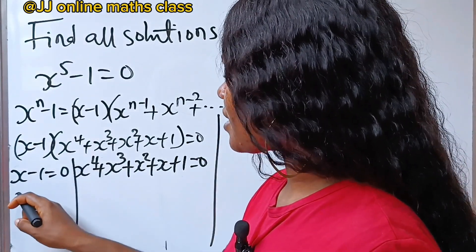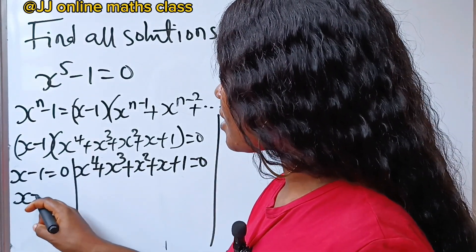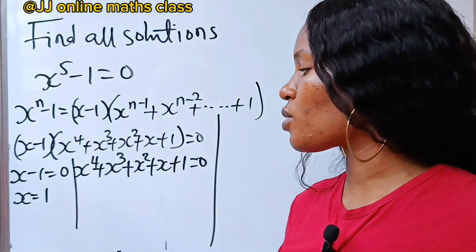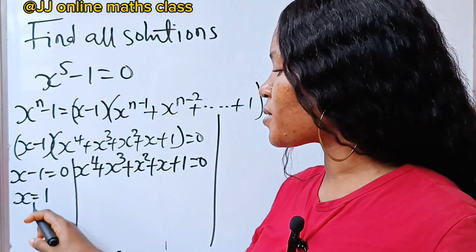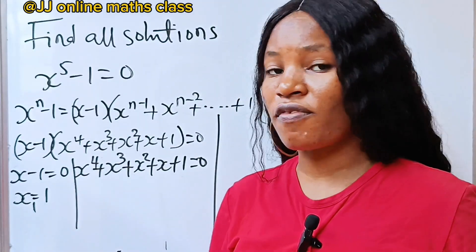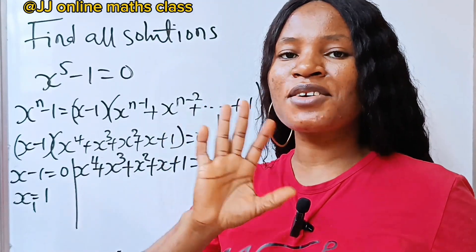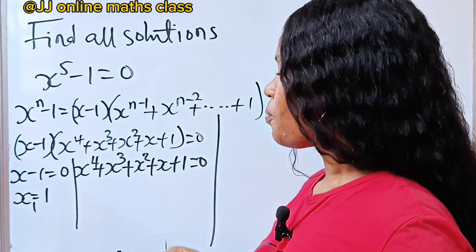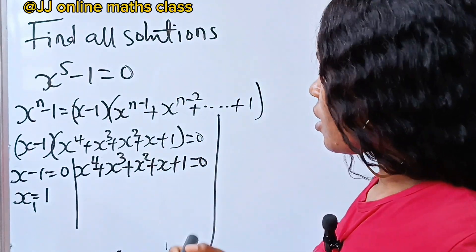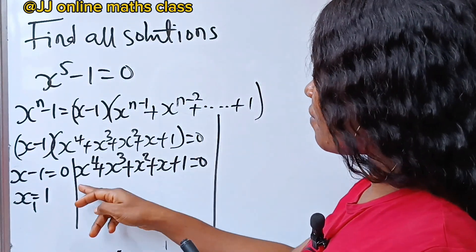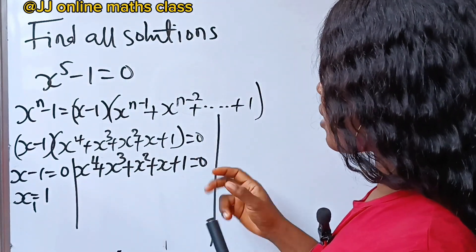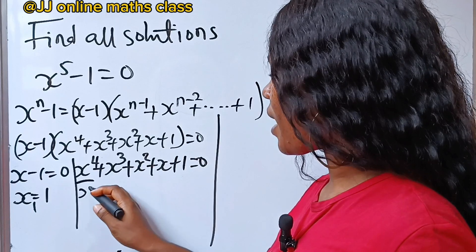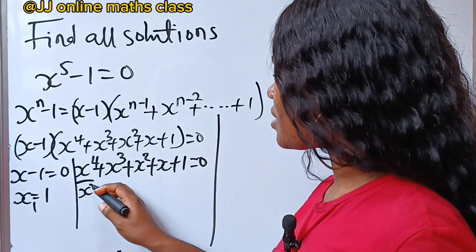From x minus 1 equals 0 we can say that x is equal to 1. So we have found the first value of x — still remaining 4 of the values. Now let's simplify this side by dividing through by x squared.